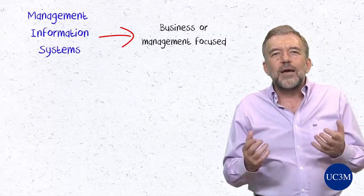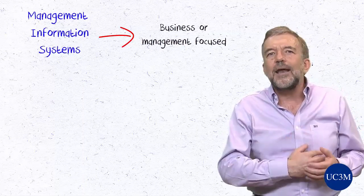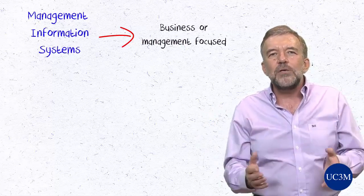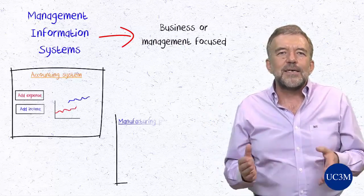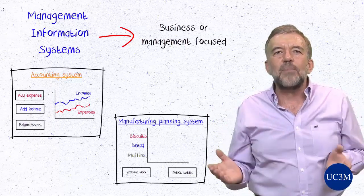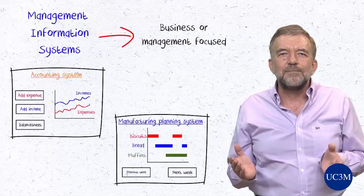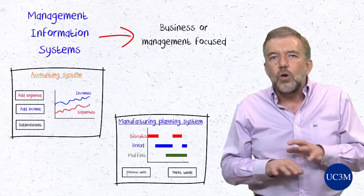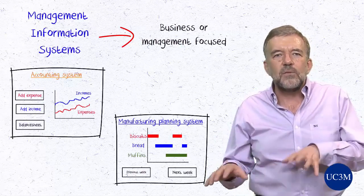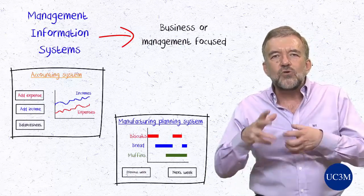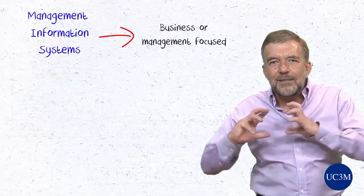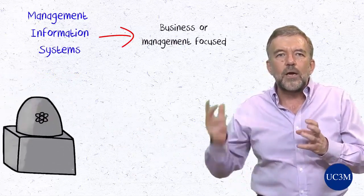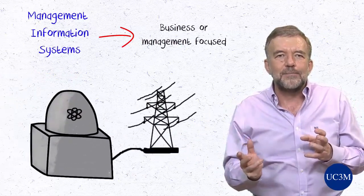If you work in a company, you will easily identify a number of other management information systems that employees use in their daily tasks, such as accounting systems or manufacturing planning systems. We shall, however, not cover here other non-management information systems, such as the software governing the internal operation of an airplane, or of a nuclear reactor, or an electrical grid.